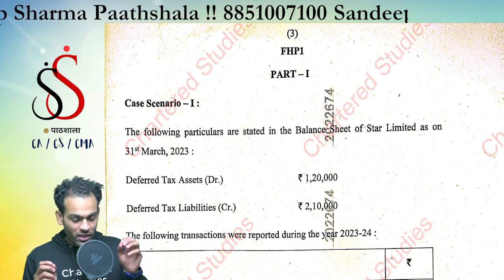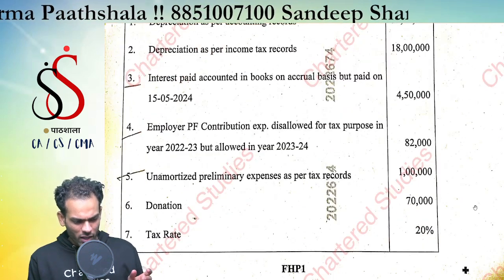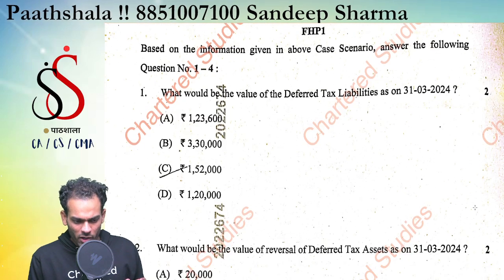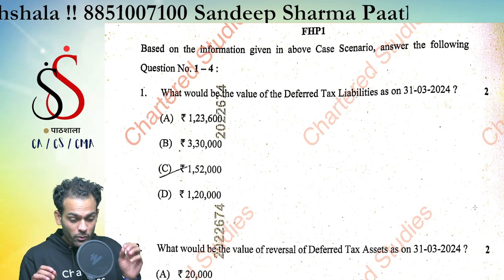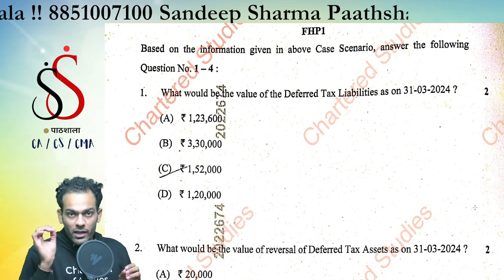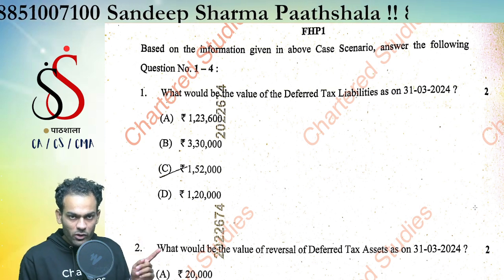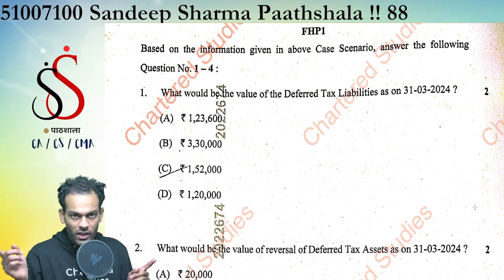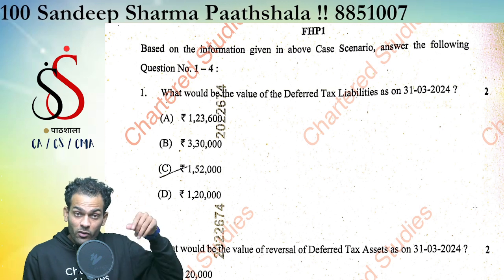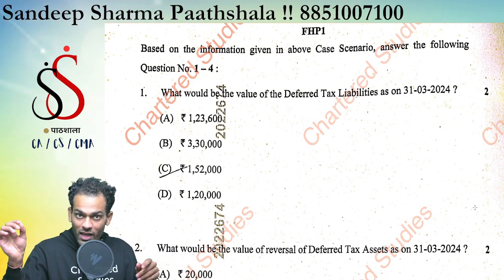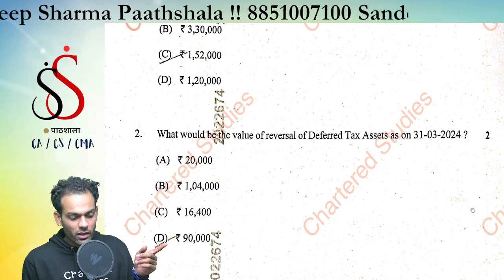First of all, there is a case study from Accounting Standard 22 whose values are given. Question one: what would be the value of deferred tax liability on 31st March 2024? The correct answer would be 3 lakh 30,000 — the opening balance of 2 lakh 10,000 plus 1 lakh 20,000. That 1 lakh 20,000 is the difference of depreciation: 18 lakh minus 12 lakh = 6 lakh, multiplied by tax rate 20%, giving 1 lakh 20,000.